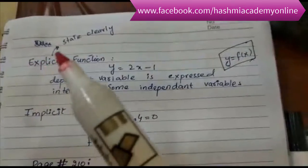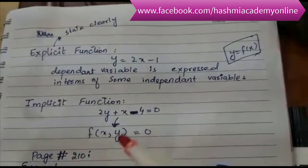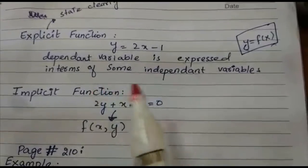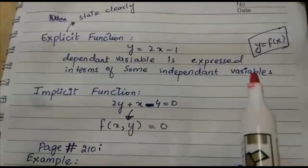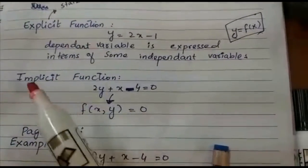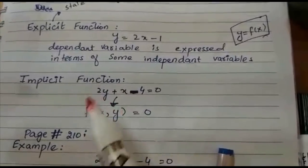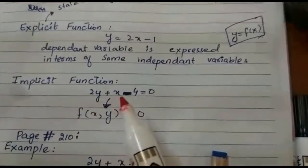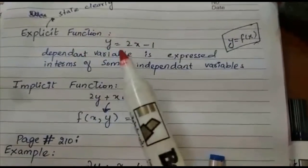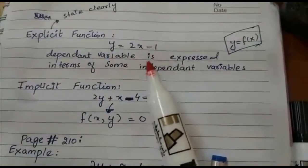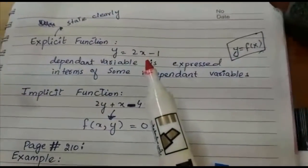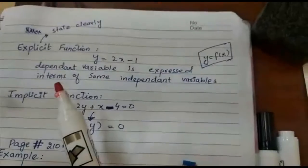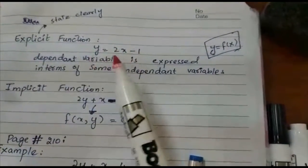We have two types of functions: explicit function and implicit function. The word 'explicit' means stated clearly. An explicit function is one where the dependent variable is expressed in terms of some independent variables. For example, y = 2x - 1, where y is completely separated and clearly stated in terms of x.